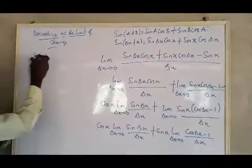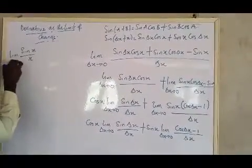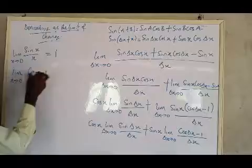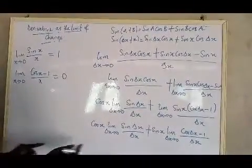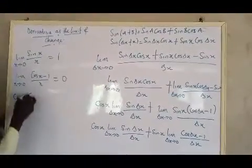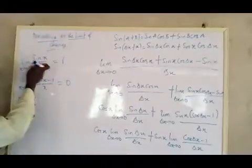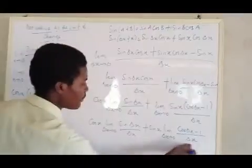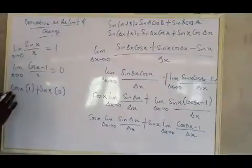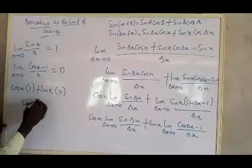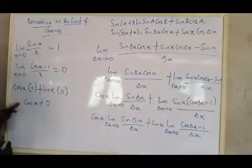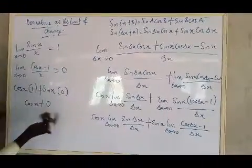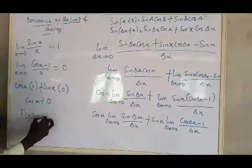So applying those special limits: the first limit, sine delta x over delta x as delta x approaches zero, equals 1. The second limit, cos delta x minus 1 over delta x, equals 0. So everything here becomes: cos x times 1, plus sine x times 0. Cos x times 1 gives cos x, and sine x times 0 gives zero. There is no delta x remaining, so f prime of x equals cos x, just as stated earlier.